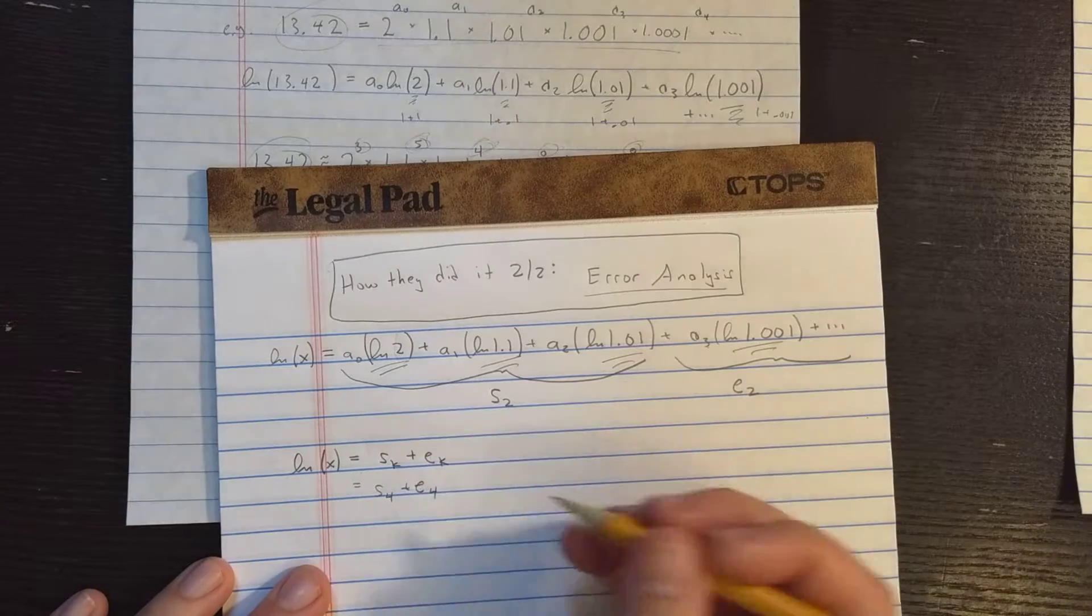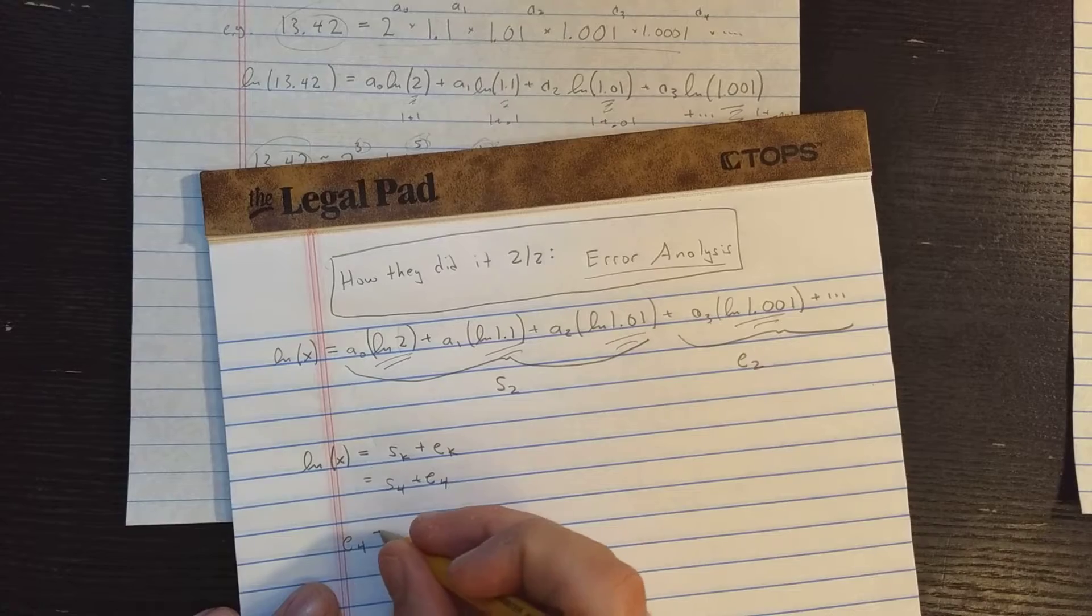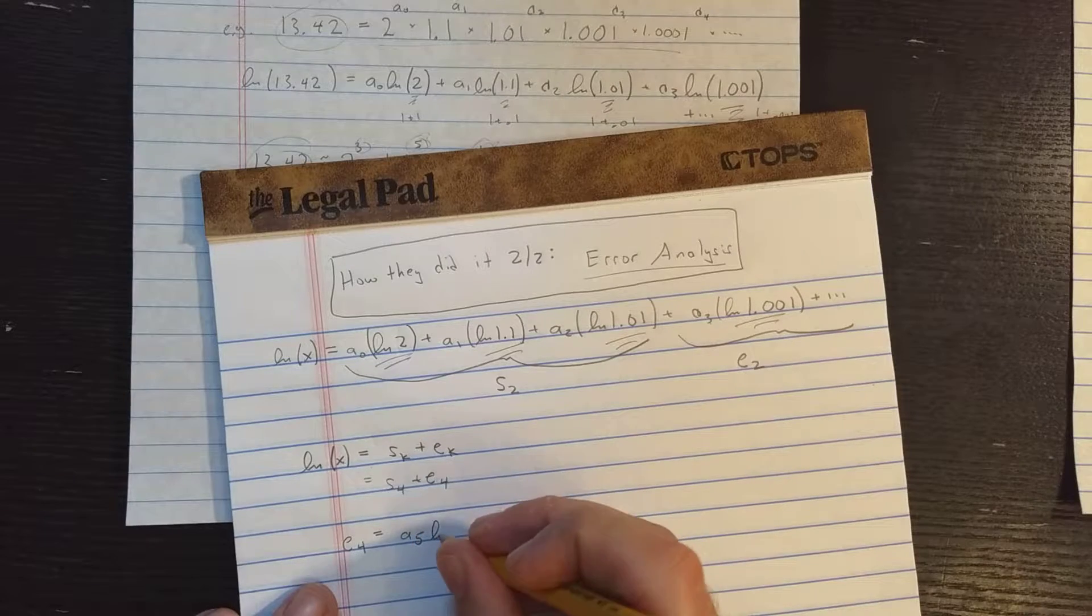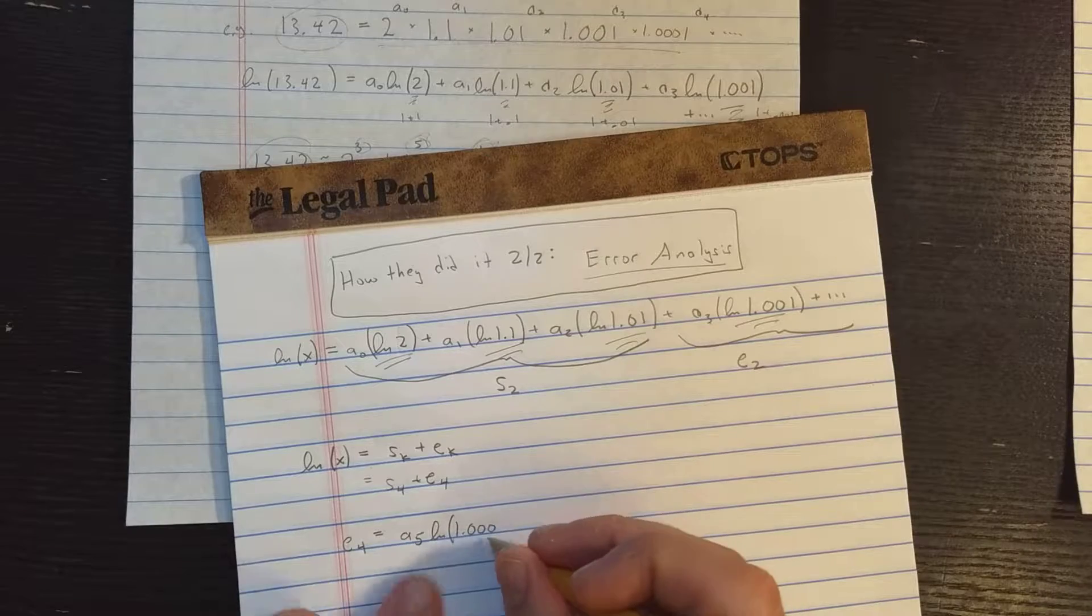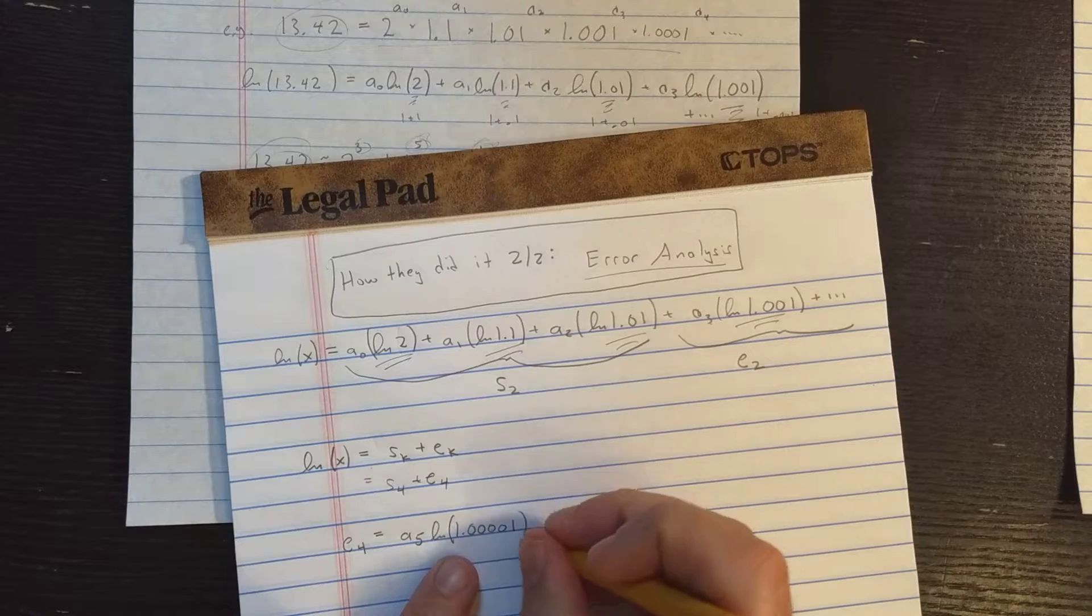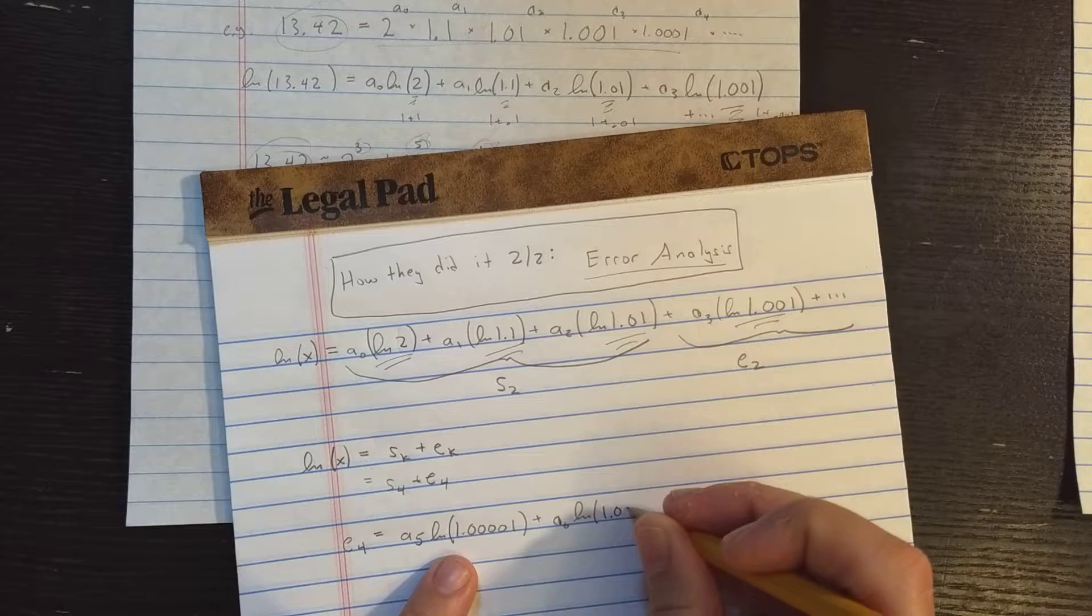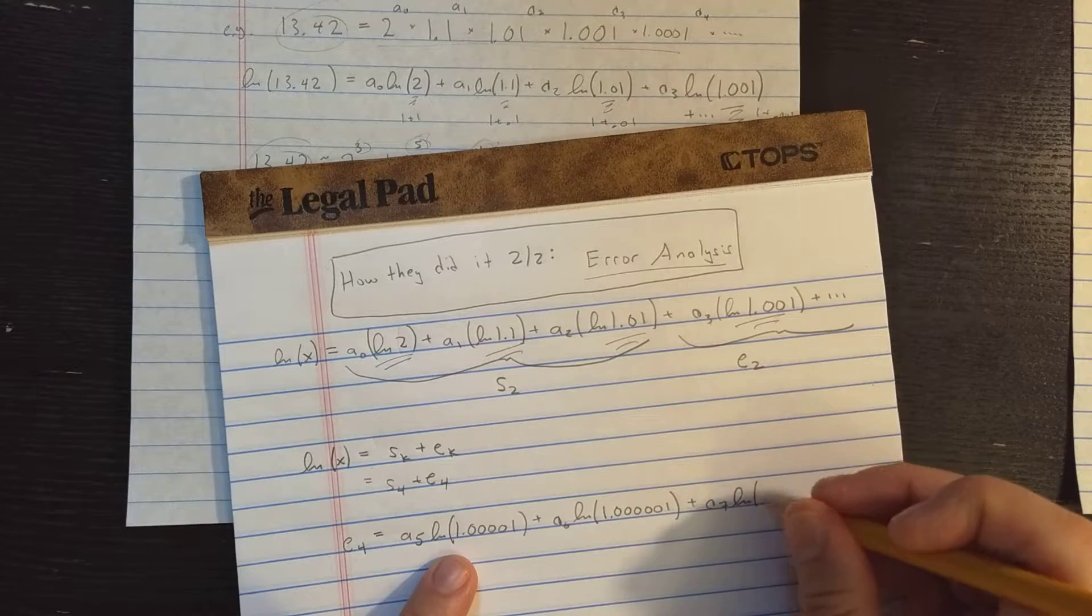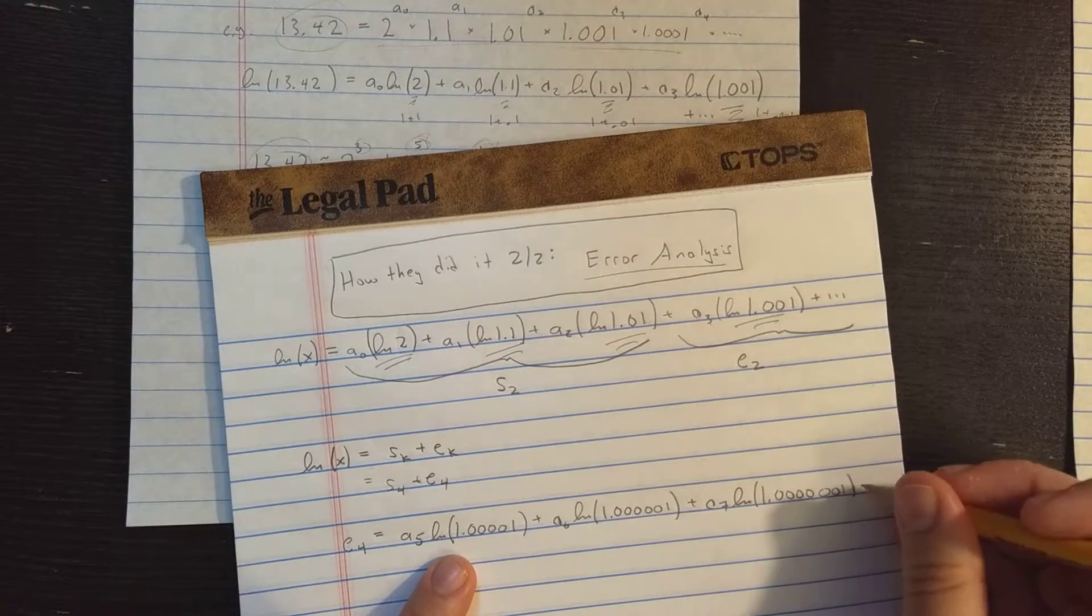Okay, so let's look at what E4 would look like. Let's look at E4. So E4, it's going to pick up with A5 and ln1.00001, then it's going to be A6, ln1.000001, A7, ln1.0000001, lots of 1s, and so on.